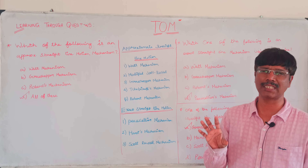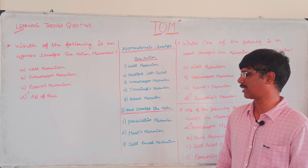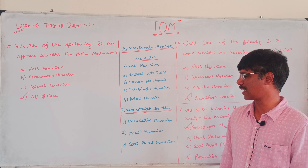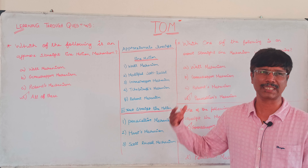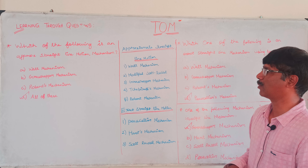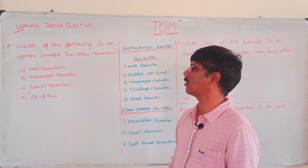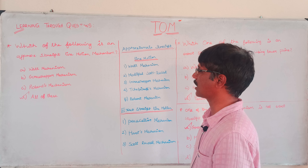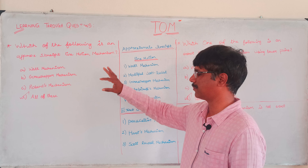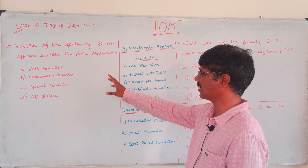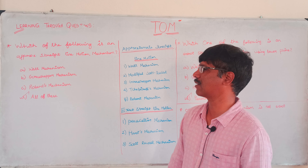Now we know exactly what we call approximate and exact straight-line motion mechanisms. To summarize: approximate straight-line mechanisms include PEAUCELLIER, WATT, and SCOTT-RUSSELL. All of this is the answer.